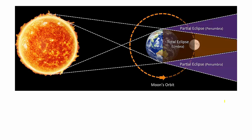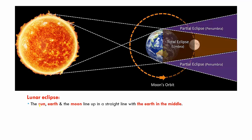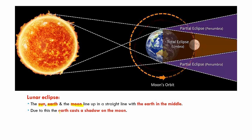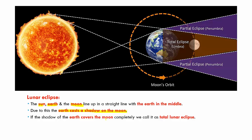Next we will move on to the lunar eclipse. In the lunar eclipse, the sun, the earth, and the moon line up in a straight line with the earth in the center. Due to this, the earth casts a shadow on the moon. If the shadow of the earth covers the entire moon, it's called a total lunar eclipse. Just like the solar eclipse, we have both a total lunar eclipse and a partial lunar eclipse.